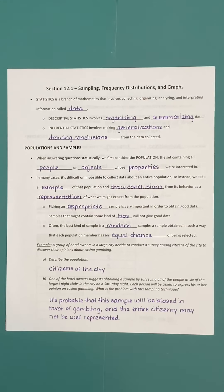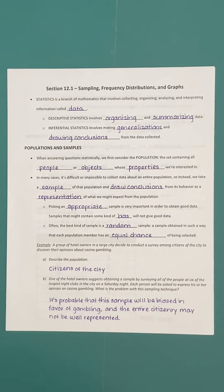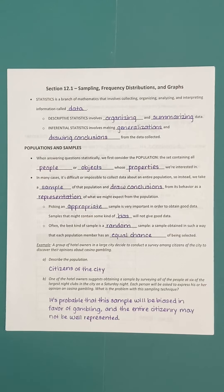A group of hotel owners in a large city decide to conduct a survey among citizens of the city to discover their opinions about casino gambling. The first thing we want to do is describe the population — the group we're trying to determine information about. In this case, we want to determine the opinions of the city's citizens about casino gambling, so the population would be the citizens of the city.